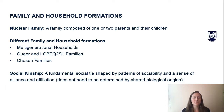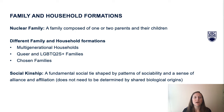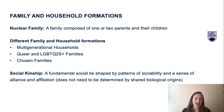In sociology, these types of bonds and relationships are forms of social kinship. Social kinship is a fundamental social tie shaped by patterns of sociability and a sense of alliance and affiliation. This doesn't necessarily need to be determined by shared biological origins.